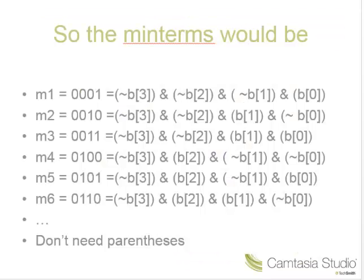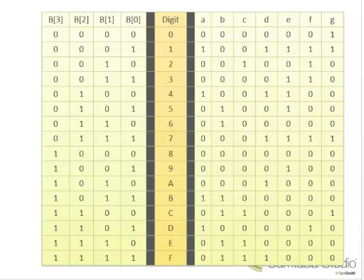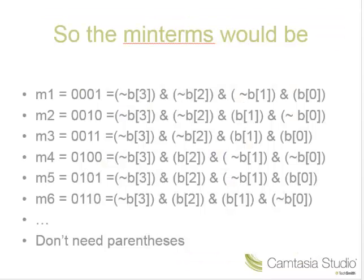We could now write an equation. If we wanted to write an equation for M1, what is M1? M1 is basically row one. We could take a look at row one. We see that row one is B3 naught, B2 naught, B1 naught, and zero, and so forth.